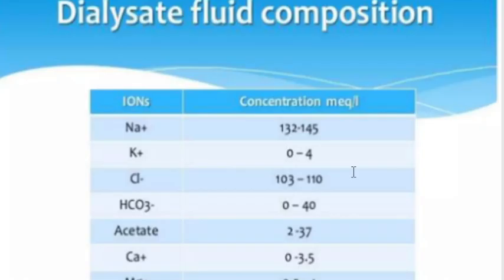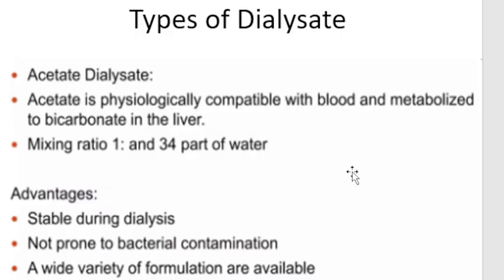There are two types of dialysate: acid dialysate and bicarbonate dialysate. Currently we are using bicarbonate dialysate. Previously, acetate dialysate was used, which consisted of only Part A and RO Water. Now we use bicarbonate dialysate, which consists of Part A, Part B, and RO Water.